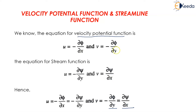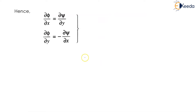We have combined the velocity potential function and stream function equations. This gives us ∂φ/∂x = ∂ψ/∂y and ∂φ/∂y = -∂ψ/∂x. Now let's move on to the numerical problems.